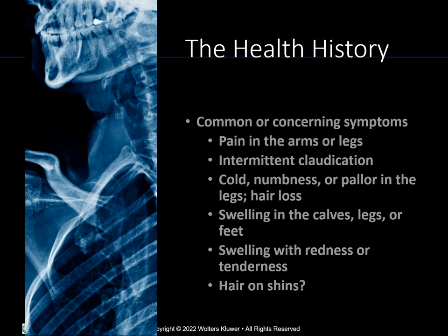Health history findings that could indicate peripheral vascular disease or peripheral artery disease are pain in the upper and lower extremities, history of intermittent claudication, which is prevalent in peripheral artery disease or PAD, cold, numbness or pallor, unintended hair loss, edema in lower extremities, tenderness and redness — all are symptoms of potential vascular problems and need further follow-up.